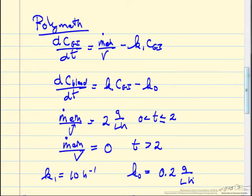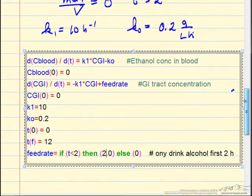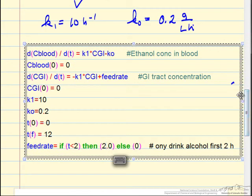We can take these equations as a Polymath program, and here is the representation of the actual program where we have the two differential equations with their initial conditions, the values of the rate constants. We integrate from time equals zero to 12 hours. The thing that is different perhaps is this feed rate. We use an if-then statement. If the time is less than two hours, then the feed rate is equal to two, otherwise it's zero.